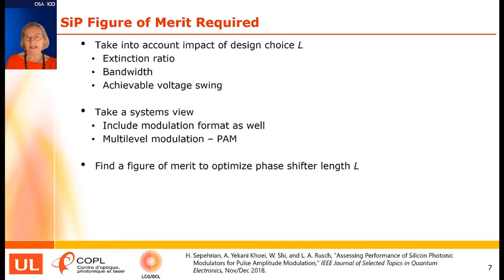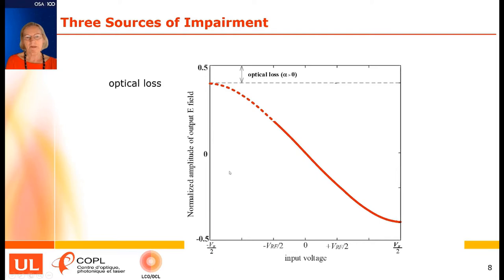What we set out to do was find a silicon photonic figure of merit that accounts for the fact that when I change the length of my modulator, I'm changing the extinction ratio, I'm changing the bandwidth, and I'm changing the achievable voltage speed. At the same time, I'm taking a systems view, looking at the modulation format — focusing in this part of the talk on multilevel modulation such as PAM. The goal is to find a figure of merit that lets me optimize the phase shifter length L.